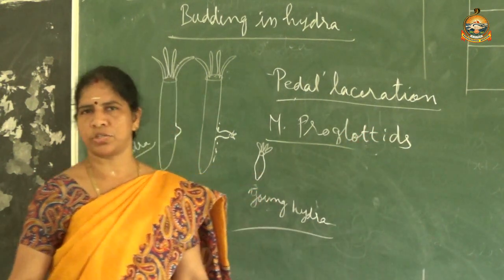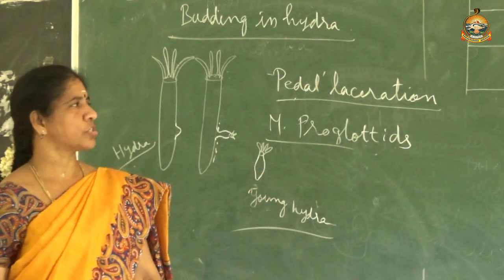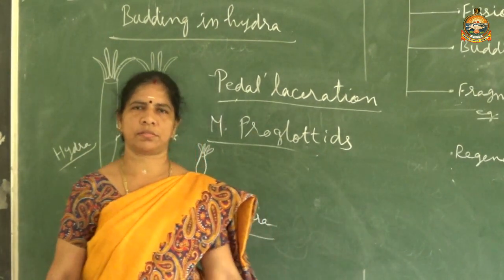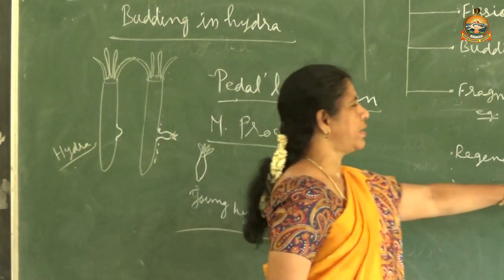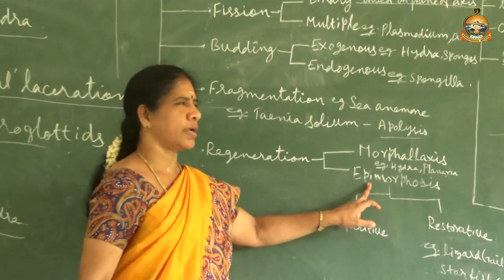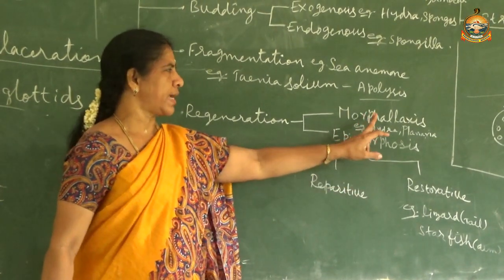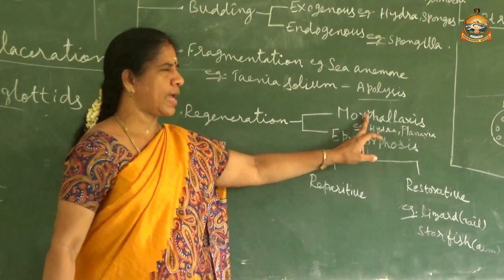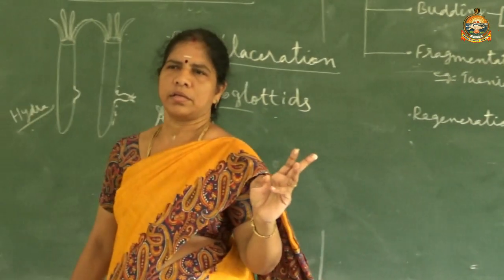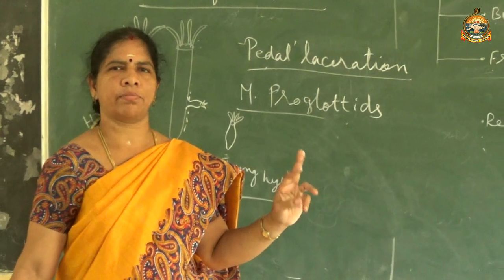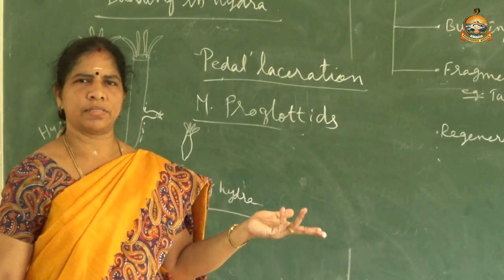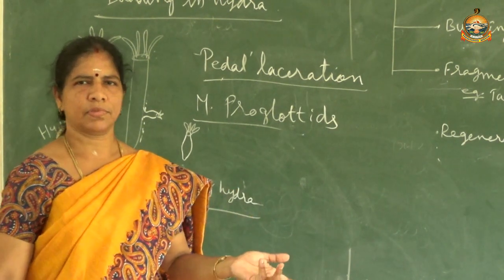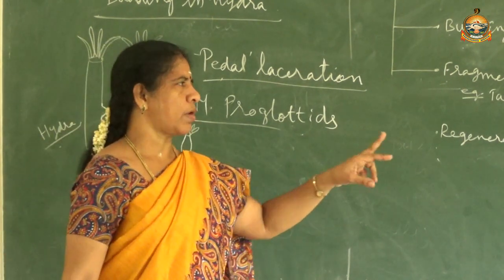Next is regeneration, which means regenerating the lost parts. It is divided into morphallaxis and epimorphosis. The example of morphallaxis is Hydra. In morphallaxis, if the parent body is cut into different pieces by accident, each piece will develop into a whole new organism.